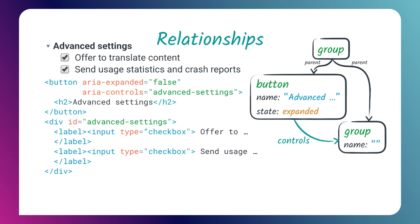ARIA can also express semantic relationships between elements that go beyond standard DOM parent, child, and sibling relationships. For example, a more complex relationship is something like "this element controls that element over there" even if they're not direct parent or child. Here I have a button controlling whether a particular part of the page is visible or hidden — a disclosure widget for advanced settings. Using aria-controls, the button is linked to the group of advanced settings checkboxes below, creating a relationship indicating this element controls that one.